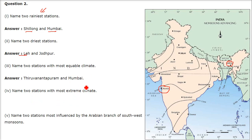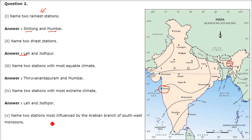Name two stations with most extreme climate. So Leh and Jodhpur — Jodhpur is quite hot and Leh is quite cold.